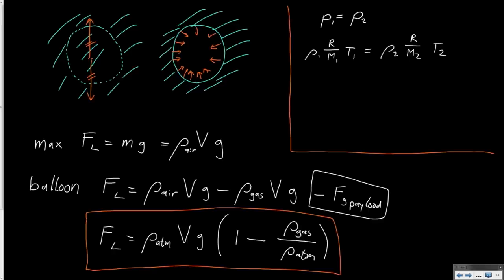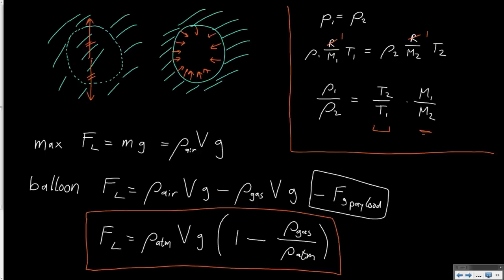This can be rewritten. Looking at the ratio of the two densities, the gas constant is the same on both sides, so it cancels. This means rho1/rho2 equals T1/T1 times M1/M2 — which is T2/T1 times M1/M2. Looking at the two types of balloons: hot air balloons where the temperature part differs and molar mass is the same, or gas balloons where the molar mass part differs and temperature is the same — we can see what the ratio of densities is and what lift is generated.